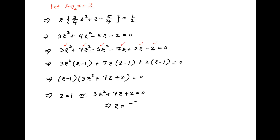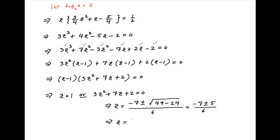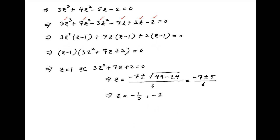Solving the quadratic for z we get minus 7 plus or minus square root of 49 minus 24, upon 6, which equals minus 7 plus or minus 5 upon 6. Therefore z equals minus 1 upon 3 or minus 2. So the possible values of z, which equals log x to the base 2, are 1, minus 1 upon 3, and minus 2.